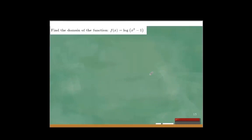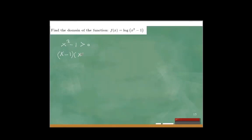Find the domain of f(x) = log(x² − 1). We should know that x² − 1 must be greater than 0 — the argument must be positive. To solve for x, I need to factor this. The difference of squares gives (x − 1)(x + 1) must be greater than 0.